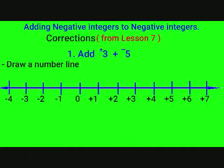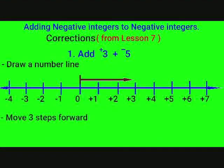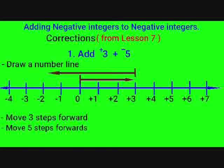After drawing the number line, starting from 0, move 3 steps forward. Then, while facing in a positive direction, move 5 steps backwards. The answer is negative 2.